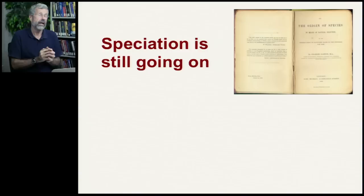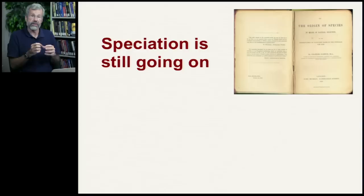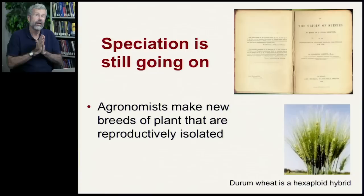Darwin wrote about the origin of species, and this was a revolutionary concept at the time. Species were arising, and he outlined some of the ways this could happen — this was key to his whole explanation of the evolutionary process. But it's not something that just happened millions of years ago. Speciation still happens today. All populations on Earth are evolving, there are changes in gene frequencies, and there are populations that become subdivided and no longer mate with each other — they're on their way to becoming different species.